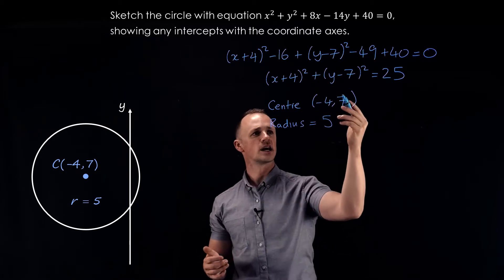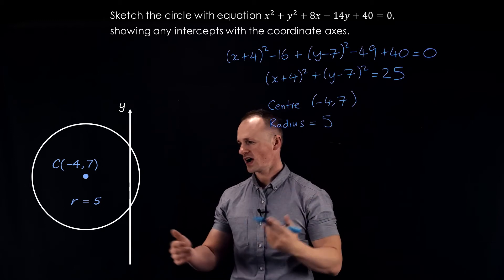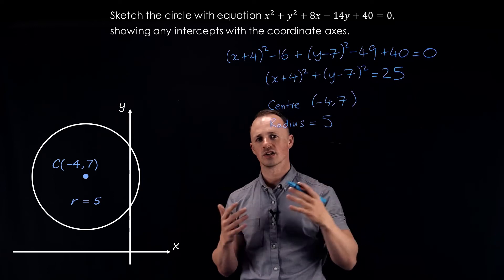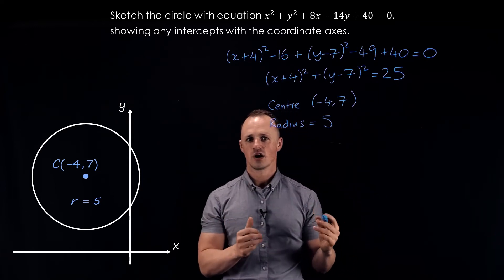However, if we started at 7 and moved down by 5, we would find that we don't cross the x-axis. So we've got two intercepts on the y-axis and no intercepts on the x-axis. And we need to make sure that that's clear on our sketch.